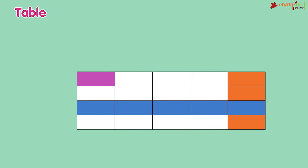Table: Word 2016 allows us to arrange data in a tabular format. A table is a grid made up of rows and columns. A column is the vertical series of cells, and a row is the horizontal series of cells in a table. The intersection of a column and a row is called a cell. A table can be used to store and display data in a structured format, and is useful for making lists and comparing items efficiently.